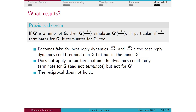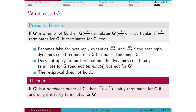What we did in the paper is find another notion of minor — a dominated-edge minor — where you can only remove edges if they are dominated by some other edges. Sticking to that, you obtain a very good result: you can prove not only that the dynamics terminates for G if and only if it terminates for G', but also that this holds for fair termination and for the best-reply dynamics.